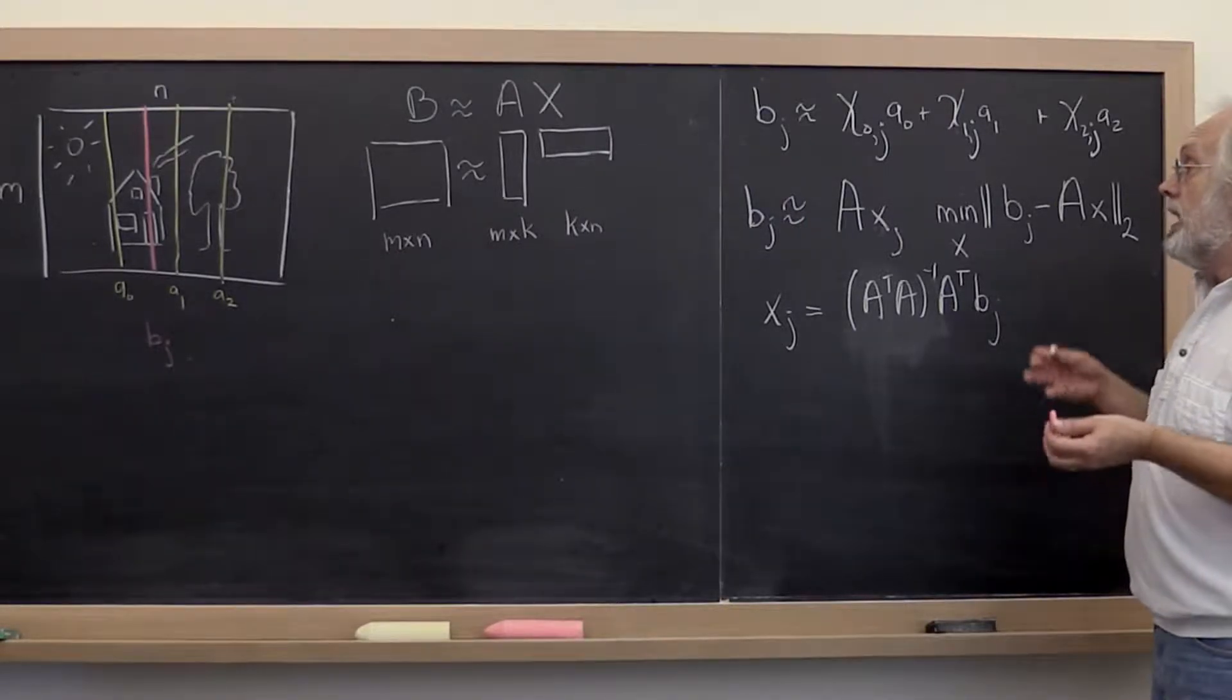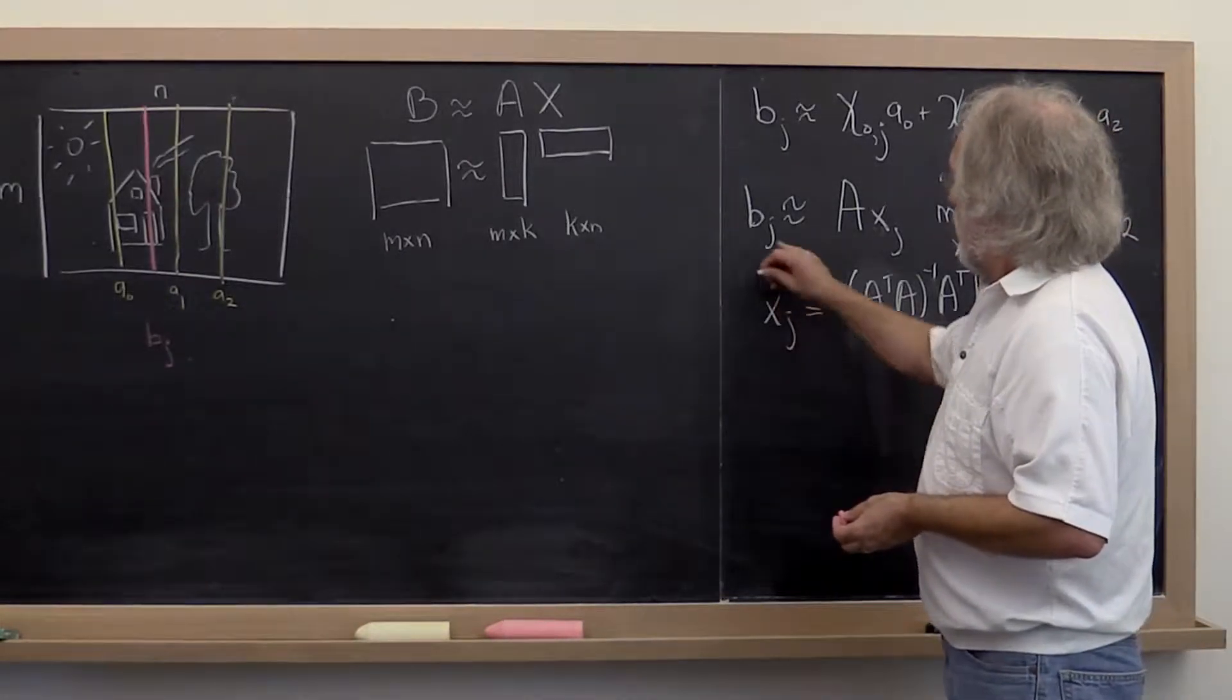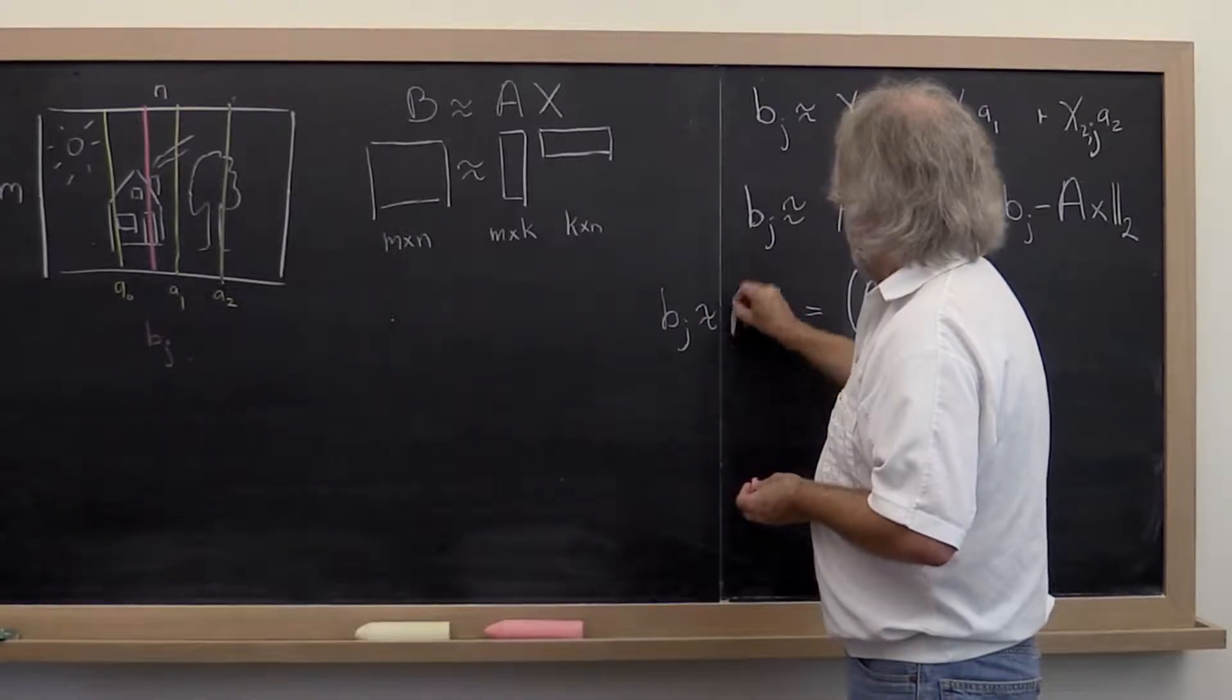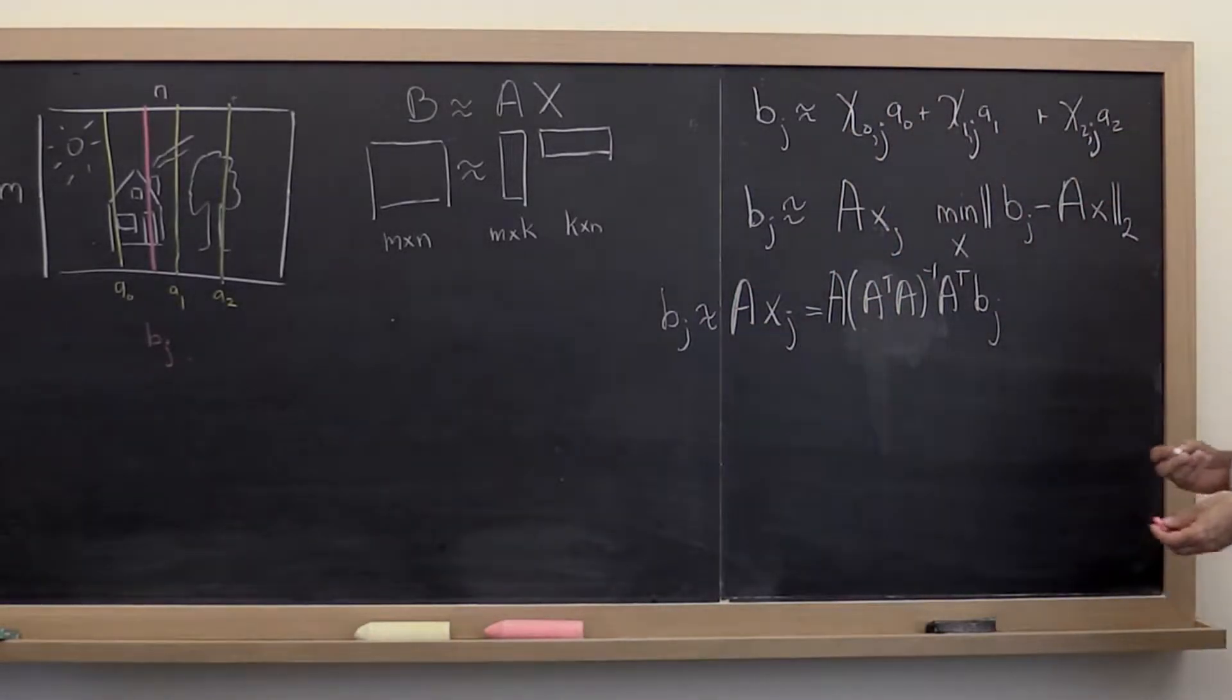And what does that mean? Well that means that our Bj is approximately A times that vector which is given by that right there.